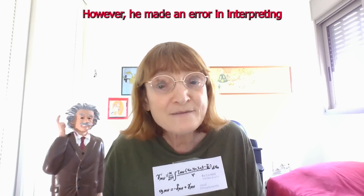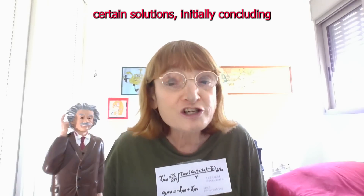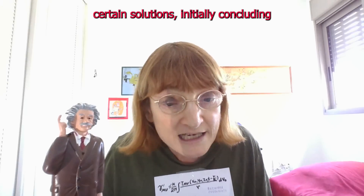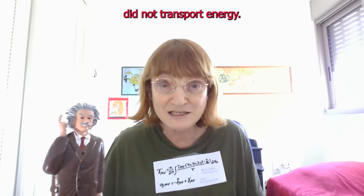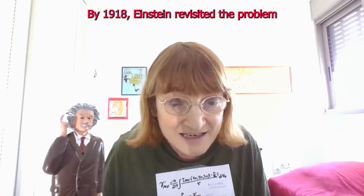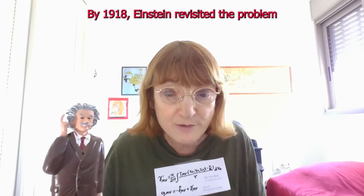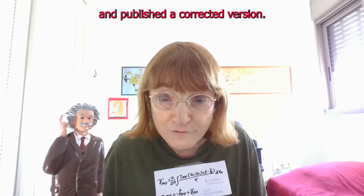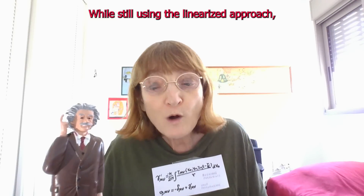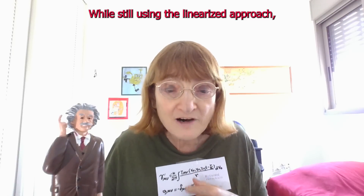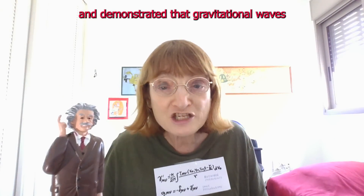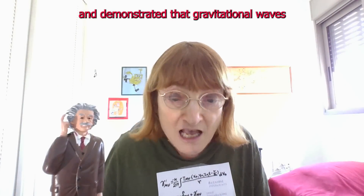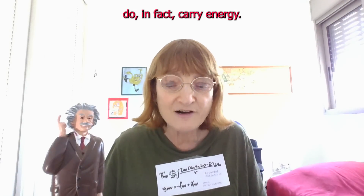However, he made an error in interpreting certain solutions, initially concluding that some gravitational wave forms did not transport energy. By 1918, Einstein revisited the problem and published a corrected version. While still using the linearized approach, he amended his earlier mistake and demonstrated that gravitational waves do, in fact, carry energy.